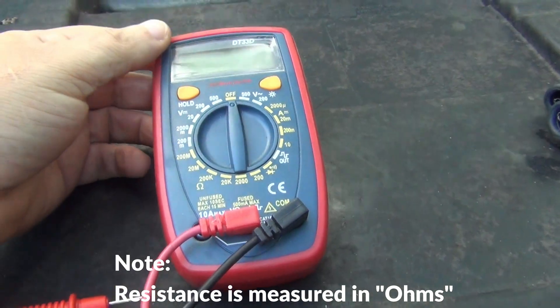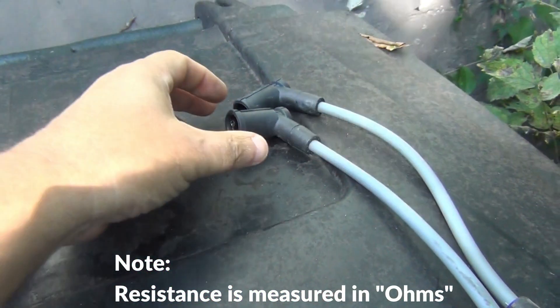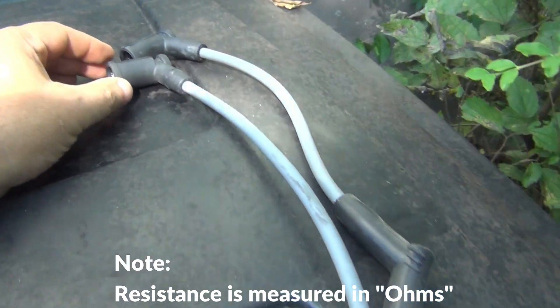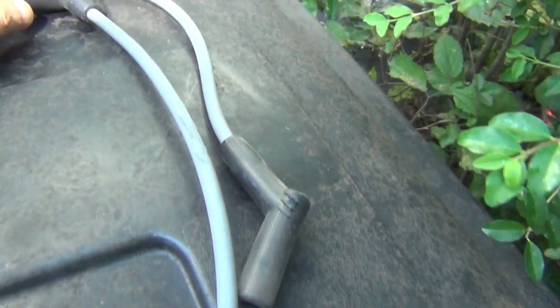All you need is a basic multimeter like this and your spark plug wires. Now, when you check the resistance on a spark plug wire, the longer the spark plug, the higher the resistance.